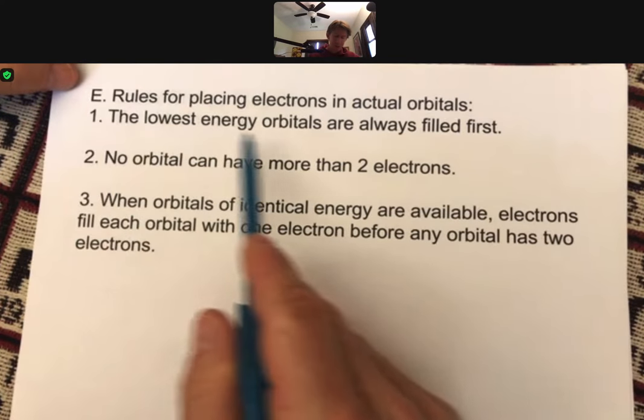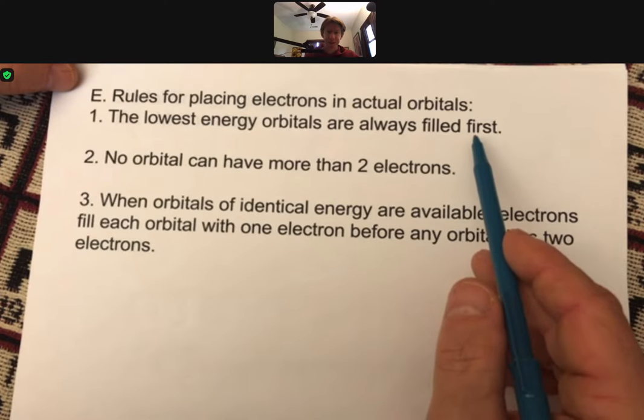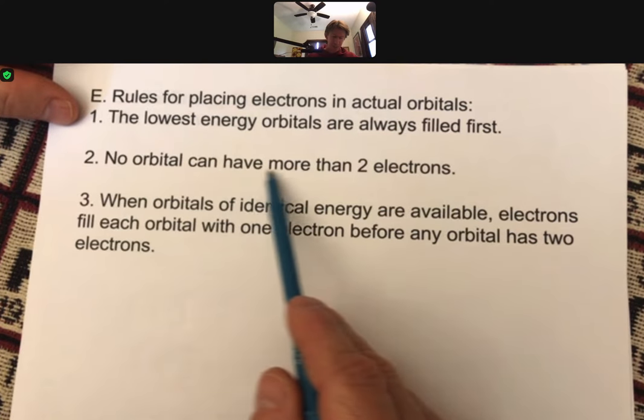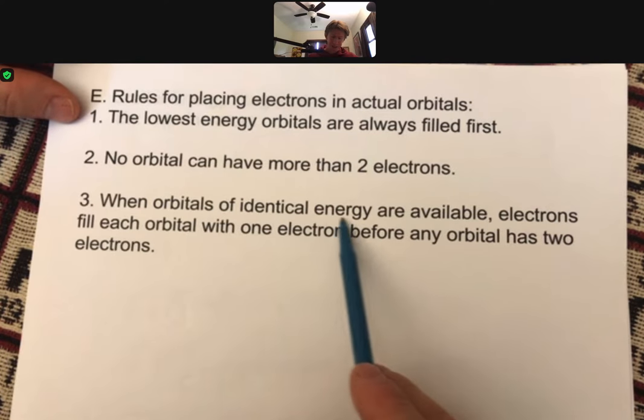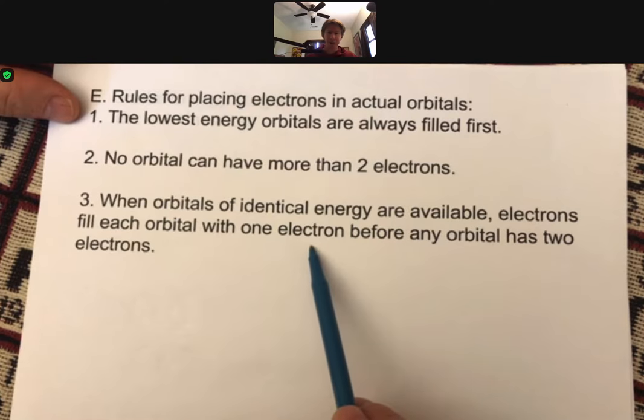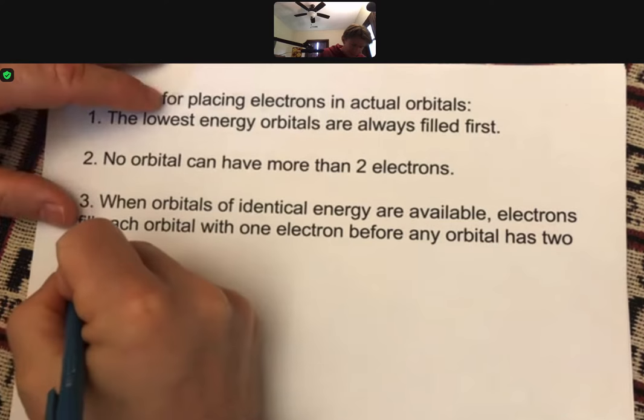First one is, the lowest energy orbitals are always filled first, and we'll talk about what this means. No orbital can have more than two electrons. When orbitals of identical energy are available, electrons fill each orbital with one electron before any orbital has two electrons.